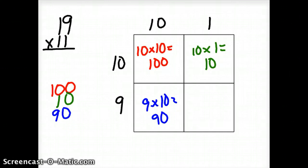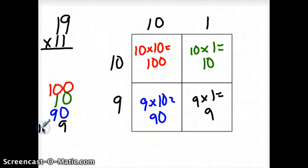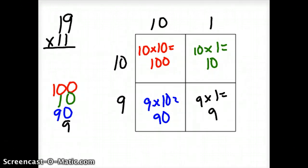And finally, we'll still have 9 times 1, which equals 9. When we add these up, our answer, again, is going to remain the same, 209.